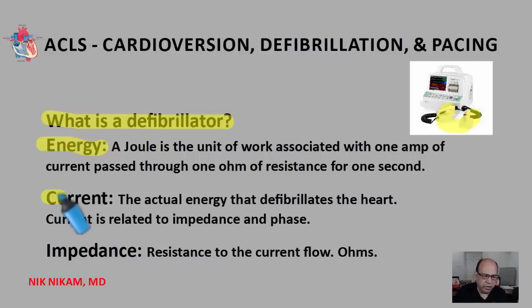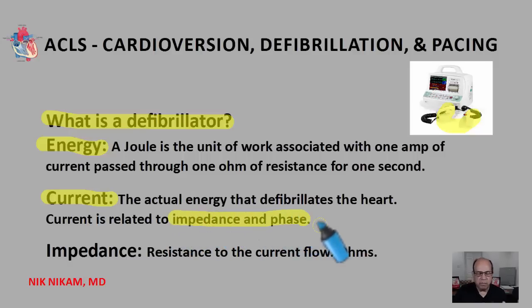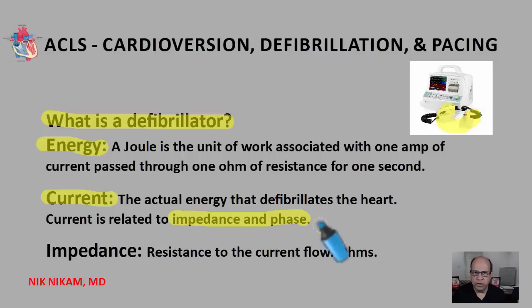The actual energy delivered through defibrillation is current — the electrons. The ability of the current to reach a target organ and do its work depends on two things: impedance and phase. Impedance is the resistance — if you are trying to get electricity through wood it's very hard, but through a steel plate conduction is very fast. Our skin offers a fair amount of resistance, which is why we use gel pads to improve the flow of electric current.